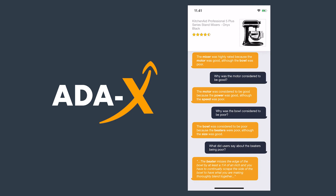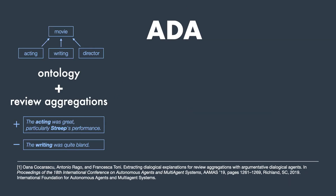So how does all this work? AdaX is a generalized version of the Argumentative Dialogical Agent, or ADA, proposed by my supervisor Professor Francesca Toni, which has previously been explored for movie and wholesale reviews. AdaX requires an ontology for the product, such as the one shown here for movies, which it uses to mine review aggregations from the review texts using sentiment analysis. For example, the acting was determined to be a positive aspect of the movie using sentiment analysis, while the writing was determined to be a negative aspect.